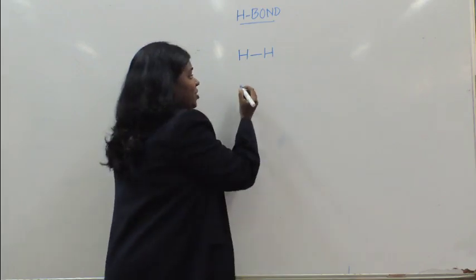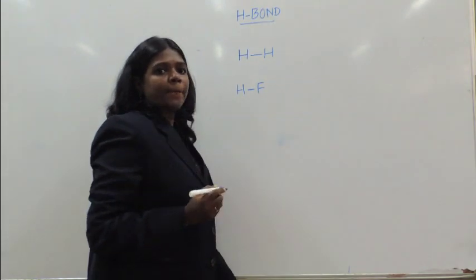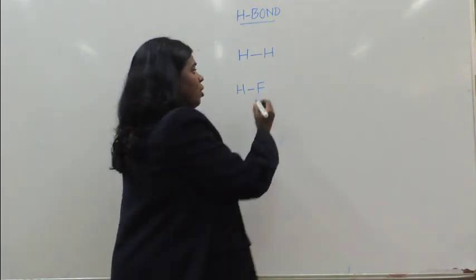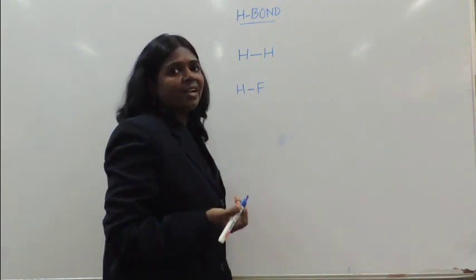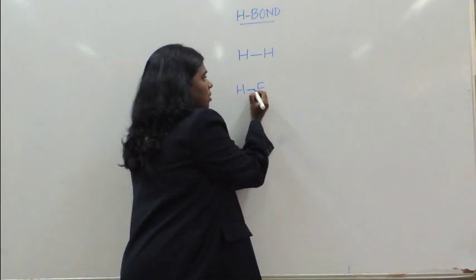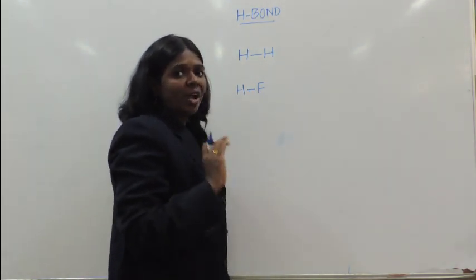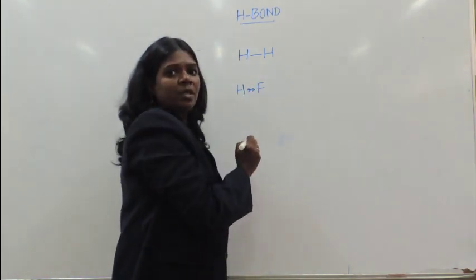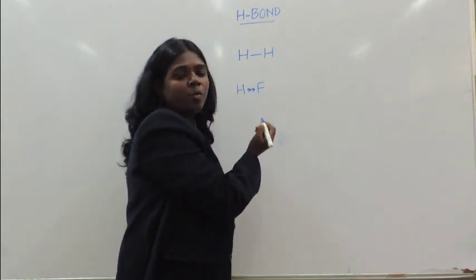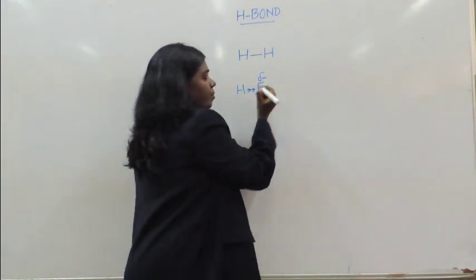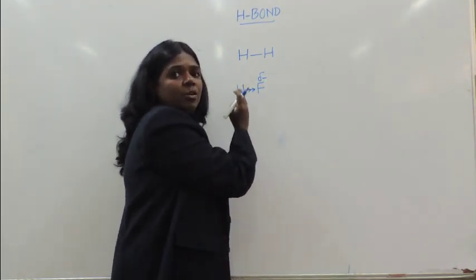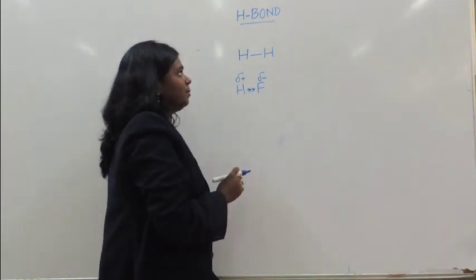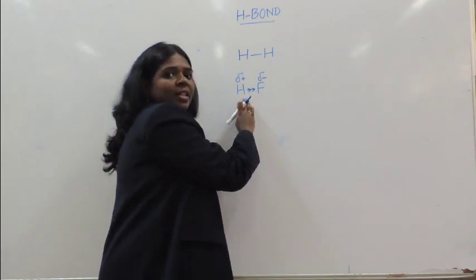Now if I take another example — let's say hydrogen fluoride, HF. Though this is also a covalently bonded molecule, fluorine, as you all know, is the most electronegative atom. So this pair of electrons between the two atoms is not shared equally; rather it is pulled a little more closely towards fluorine. Because of this, fluorine will develop a small partial negative charge, and consequently the hydrogen will develop a small partial positive charge. So the difference is: in H₂ there is no polarity, whereas in HF there is polarity developed.